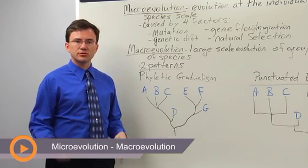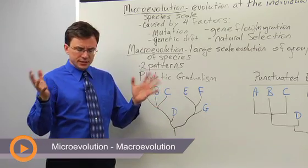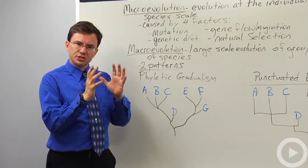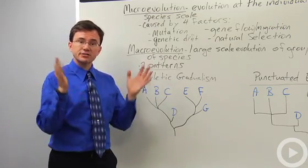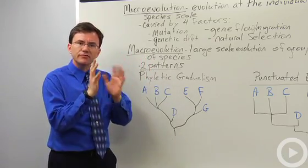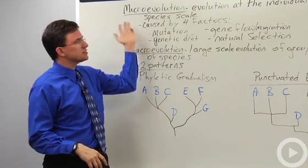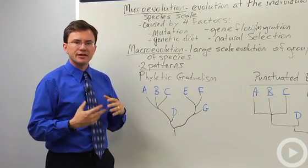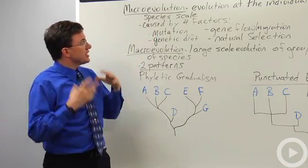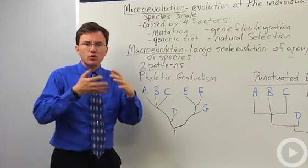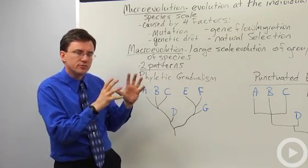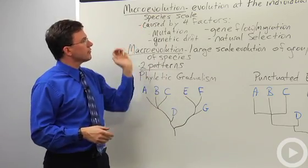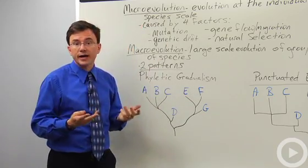When describing or discussing evolution, sometimes it's easier to narrow in your discussion at the small-scale level or the large-scale level. When scientists are talking about small-scale evolutionary changes, that might be described as microevolution. That's when you're talking about evolution at the individual species scale. What's going on in this particular group of squirrels in this particular park, for example? Microevolution can be caused by four factors.